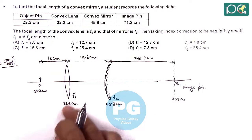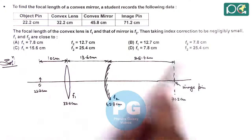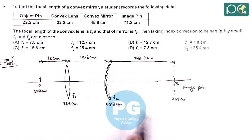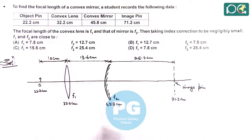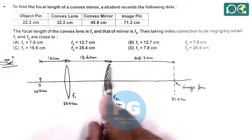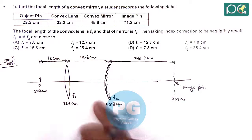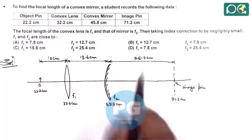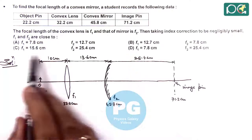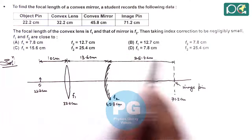We need to check which values of f1 and f2 are possible and closely matching in the experiment. Because in experiment there is always some calculation errors or errors in readings. If we carefully see, if this is the image pin, then f2 can never be 25.4 centimeter which is given in option C and D.